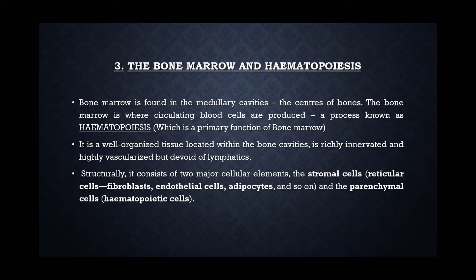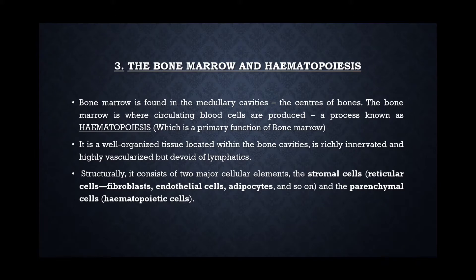The bone marrow and hematopoiesis. Bone marrow is found in the medullary cavities, which is the center of the bones. Hematopoiesis is done here, where the blood cells are produced. Structurally, it consists of two cells — stromal cells and parenchymal cells — where hematopoietic activity is carried out.